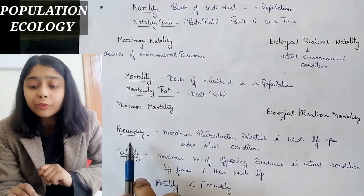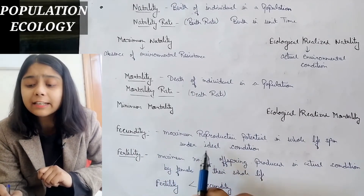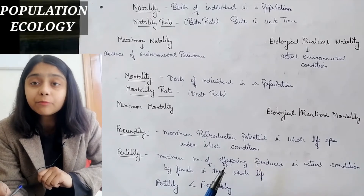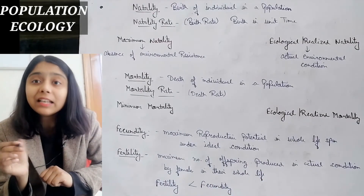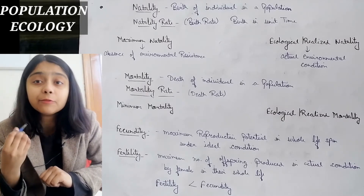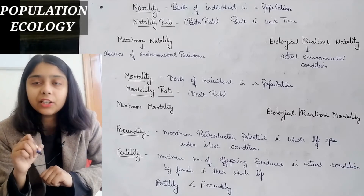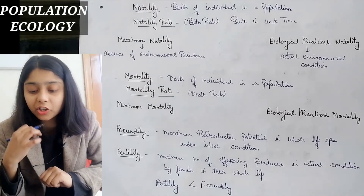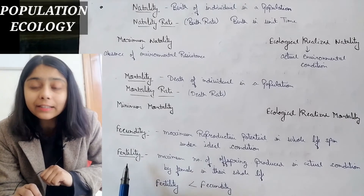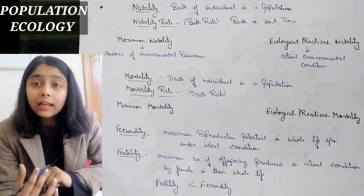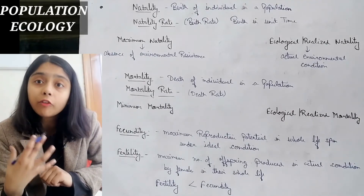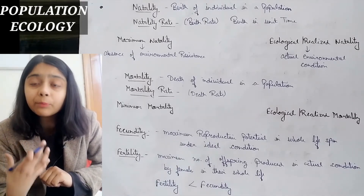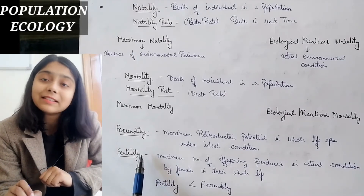One term is fecundity. Fecundity is the maximum reproductive potential in the whole lifespan under ideal conditions — how much reproductive potential a female or an organism has in their full lifespan under ideal conditions. And fertility is the maximum number of offspring produced under actual conditions. Fertility is in actual condition; fecundity is in ideal condition. Fertility is always less than fecundity.